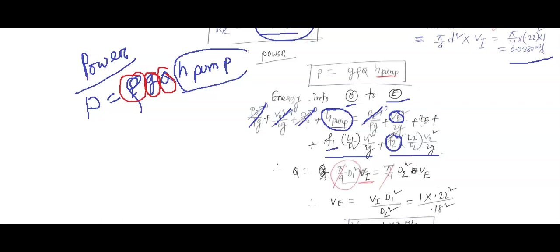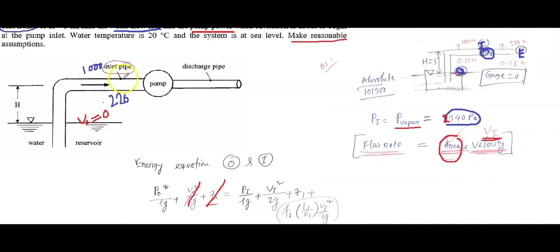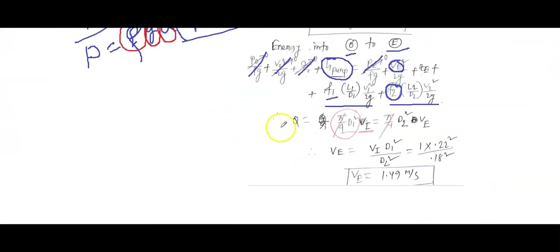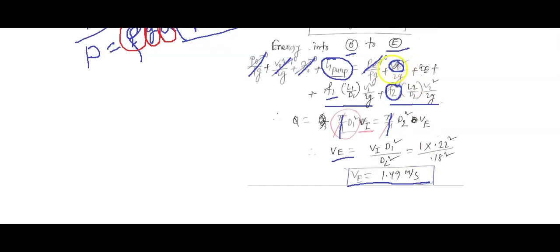Using the continuity equation (conservation of mass), the flow rate is the same in both pipes: Q = (π/4)·D_I²·V_I = (π/4)·D_E²·V_E. Solving for V_E: V_E = (D_I/D_E)² · V_I. Since we know V_I, D_I, and D_E, we can directly calculate V_E — the exit velocity — without another iterative assumption.